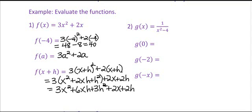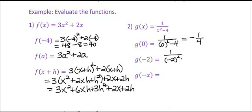Now let's take a look at our second example. We have the function g of x, which is equal to 1 over x squared minus 4. Our first example was a quadratic function; this is a rational function. To find g of 0, we're going to have 1 over 0 squared minus 4, which simplifies to negative 1 fourth. What about g of negative 2? We would have 1 over negative 2 squared minus 4, which is 1 over 4 minus 4, which is 0. Notice that that is undefined.